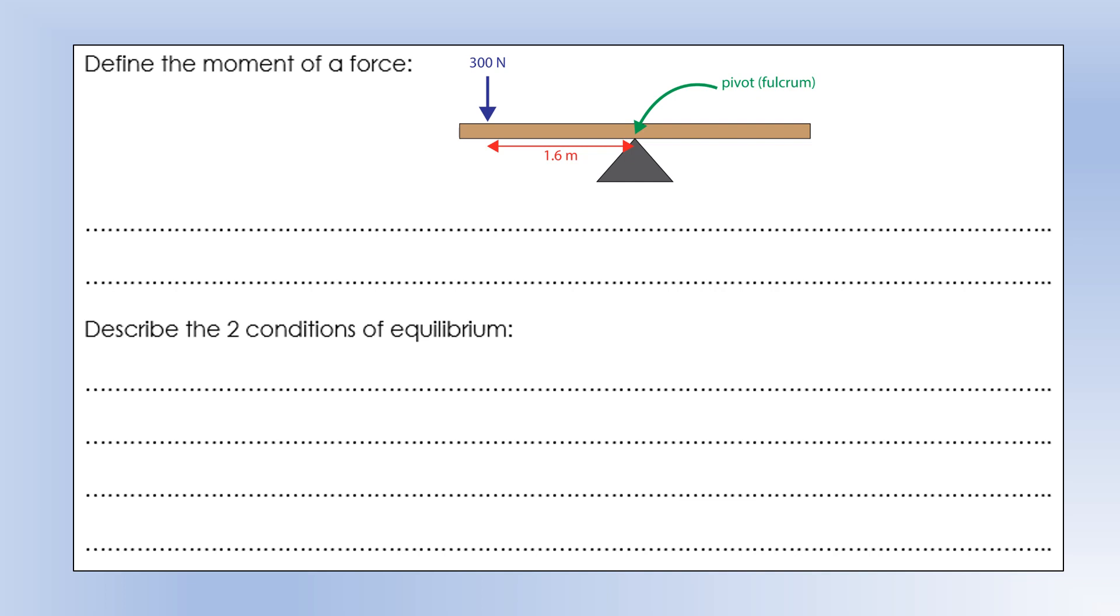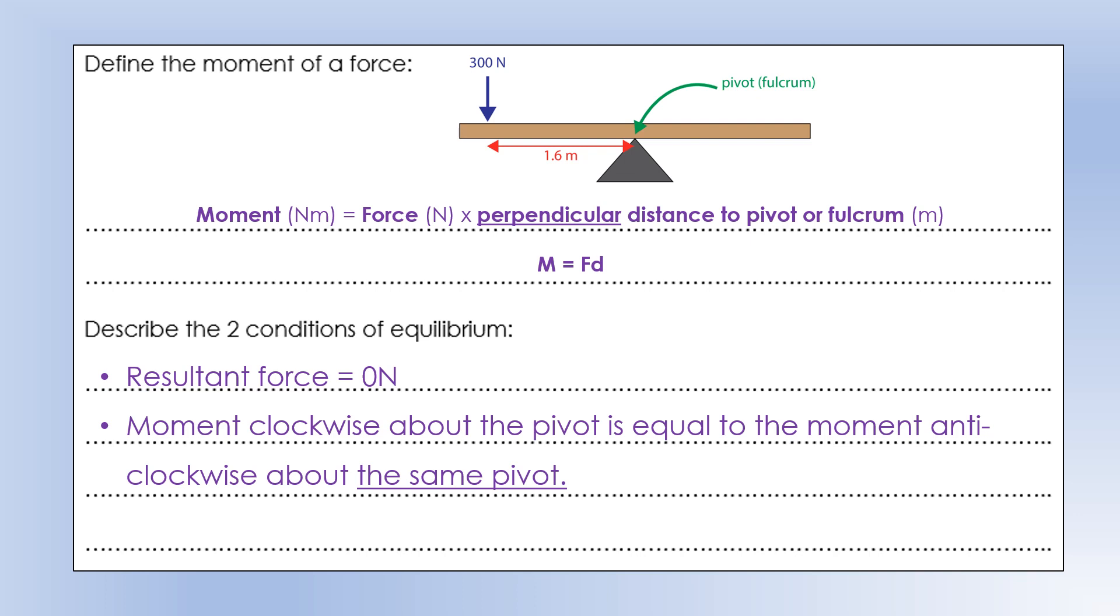Let's move on to moments, or the turning effects of forces. A moment is the force times the perpendicular distance to the pivot, sometimes known as a fulcrum. That's often expressed as moment is force times perpendicular distance. For an object to be considered in equilibrium, we need to know two things. The resultant force is equal to zero, and the moment clockwise about the pivot is equal to the moment anticlockwise about that same pivot. If those two conditions are met, that object is in equilibrium, and it will keep doing exactly what it was doing before. If it was stationary, it will stay stationary. If it was moving at constant speed, it will keep moving at the exact same constant speed.